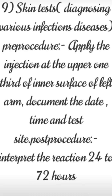Next is the skin test, which is used to diagnose various infections. We use an injection at the upper one-third of the inner surface of the left arm, then circularly mark the injection site and document the time and test site. We need to interpret the injection site 24 to 72 hours after administration, and assess for any swelling, small blisters, or elevation at the site.